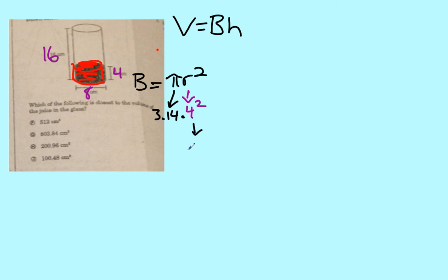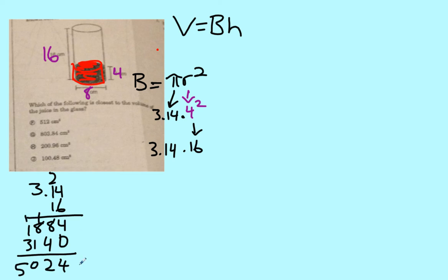So we can say 4², 4 times 4 is 16 times 3.14. 3.14 times 16. This gives us 50.24 because we have two decimal places up top, none on the bottom, so we need 2 in our answer. This is 50.24 and that is the area of our base.